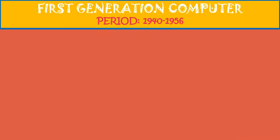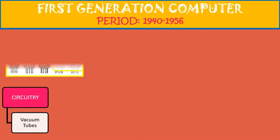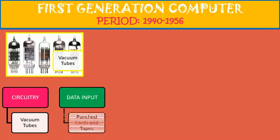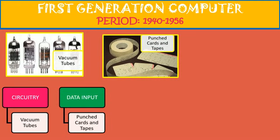Now let us study about the first generation computers. The time period for this generation was 1940 to 1956. The circuitry used in this generation was vacuum tubes. You can see the picture of vacuum tubes here. They were very large in size, because of which the size of the computer was also very huge. The data input was given with the help of punched cards and tapes. You can see the picture of punch cards and tape here. The cards and tapes were punched — they had holes in them which helped in reading the input.